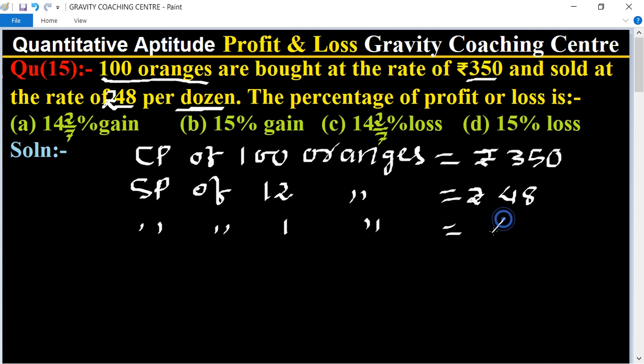So the SP of one orange equals 48 divided by 12, which equals 4.